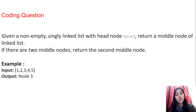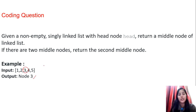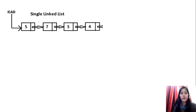For example, if the input is 1, 2, 3, 4, 5 — these are the values present in our linked list — the middle element is node 3. So in the output we have to return node 3.